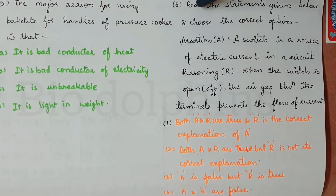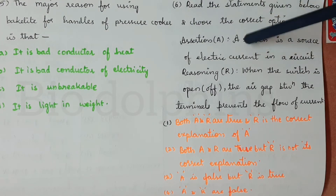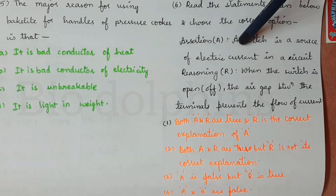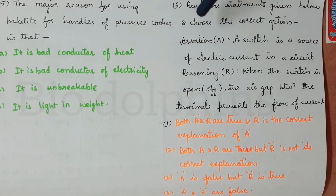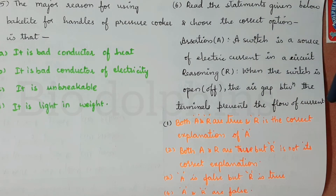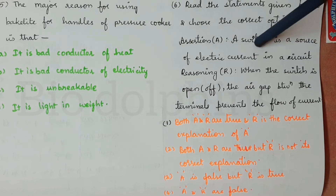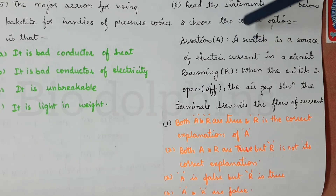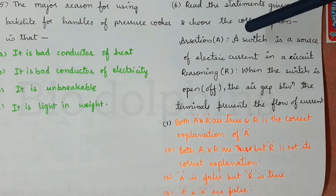Sixth question: read the statements and choose the correct option. Assertion A: a switch is the source of electric current in a circuit. Reasoning R: when the switch is open, the air gap between the terminals prevents the flow of current. Assertion A is not true — a switch is not the source of electric current in a circuit.